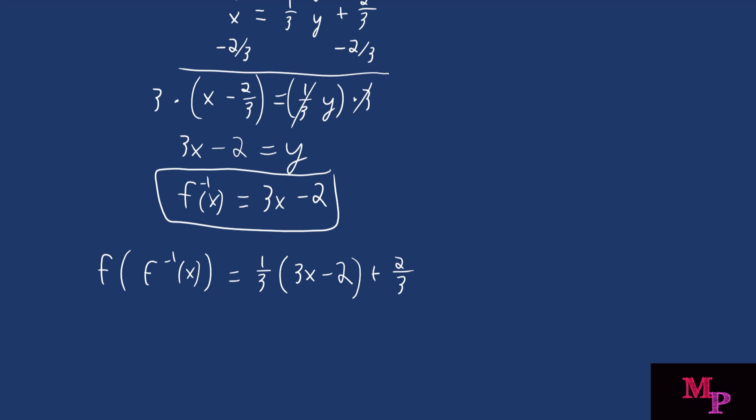So one-third times three is just going to give you one. One-third times negative two is going to give you negative two over three, and then bring down the two over three.